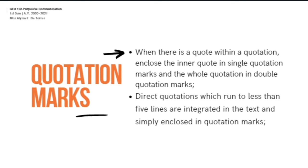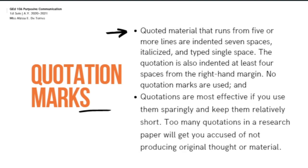When there is a quote within a quotation, enclose the inner quote in single quotation marks and the whole quotation in double quotation marks. Direct quotations which run to less than five lines are integrated in the text and simply enclosed in quotation marks. Quoted material that runs five or more lines is indented seven spaces, italicized, and typed single space. The quotation is also indented at least four spaces from the right-hand margin. No quotation marks are used. Quotation marks are most effective if you use them sparingly. Too many quotations in a research paper will get you accused of not producing original thought or material.